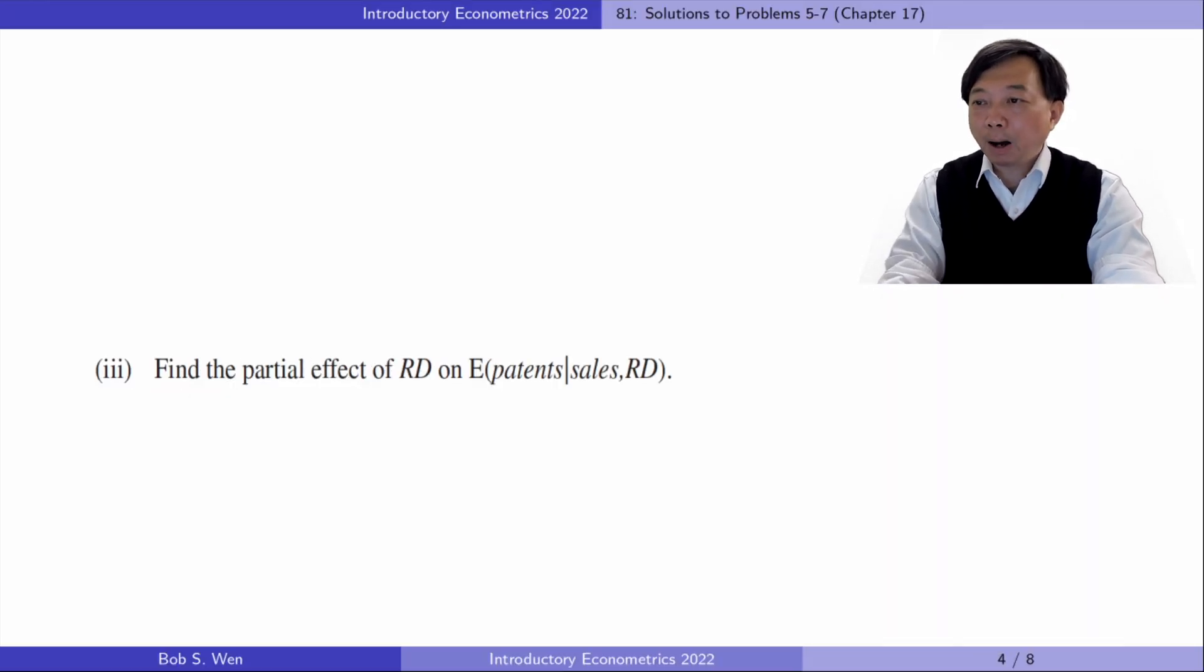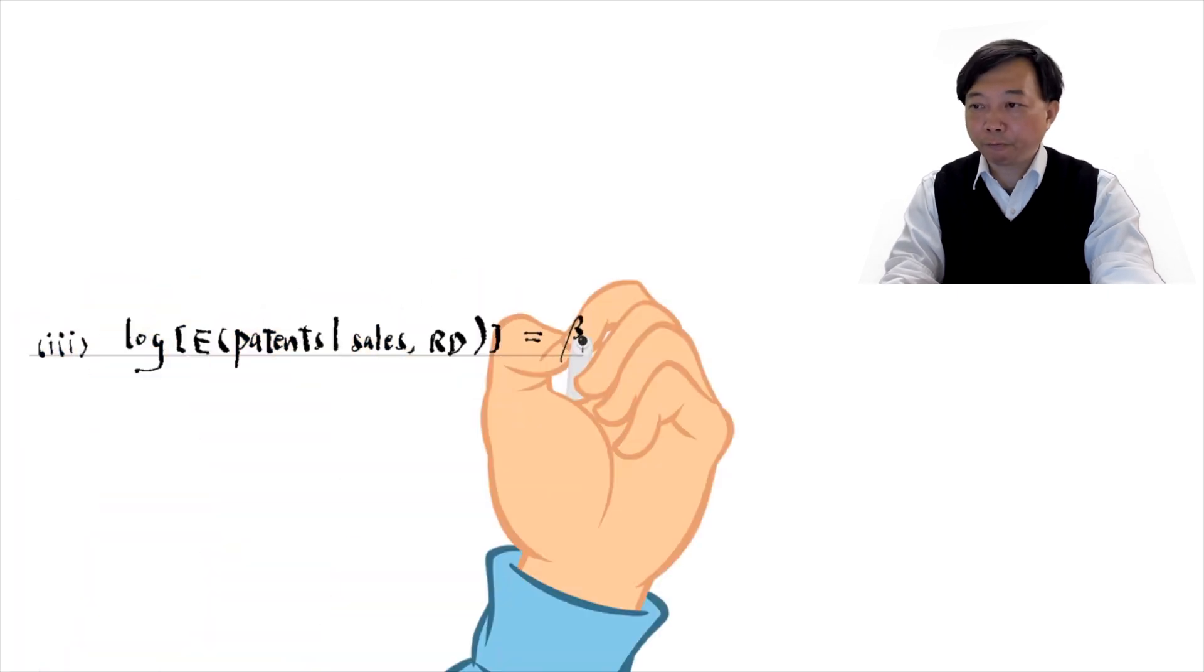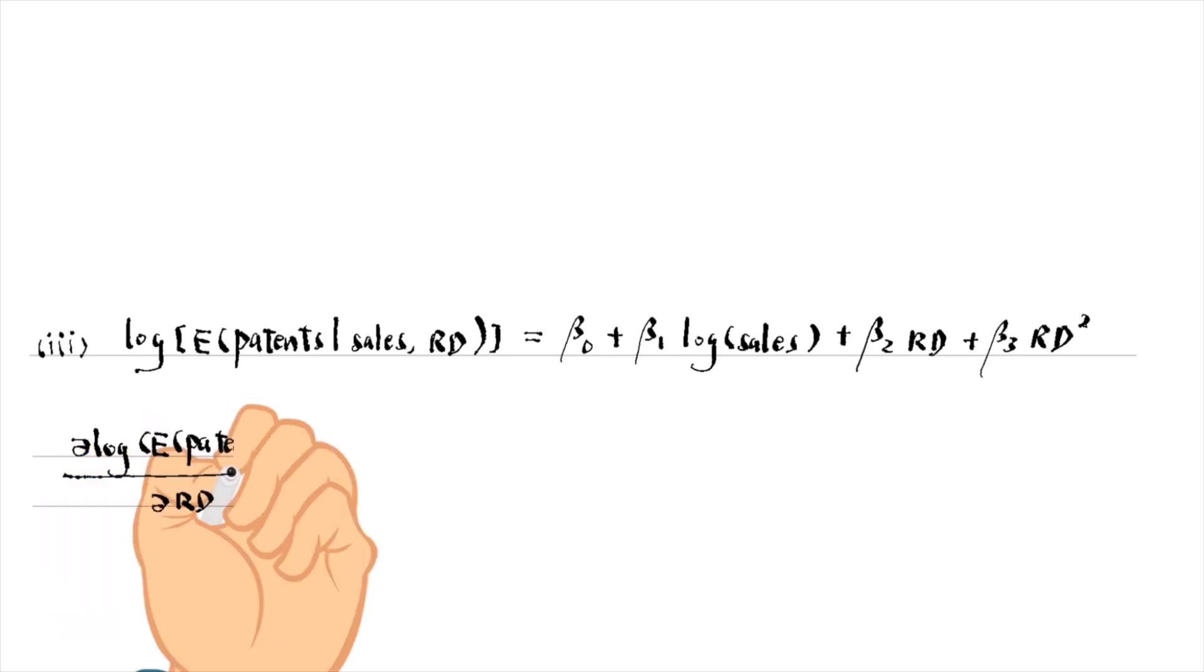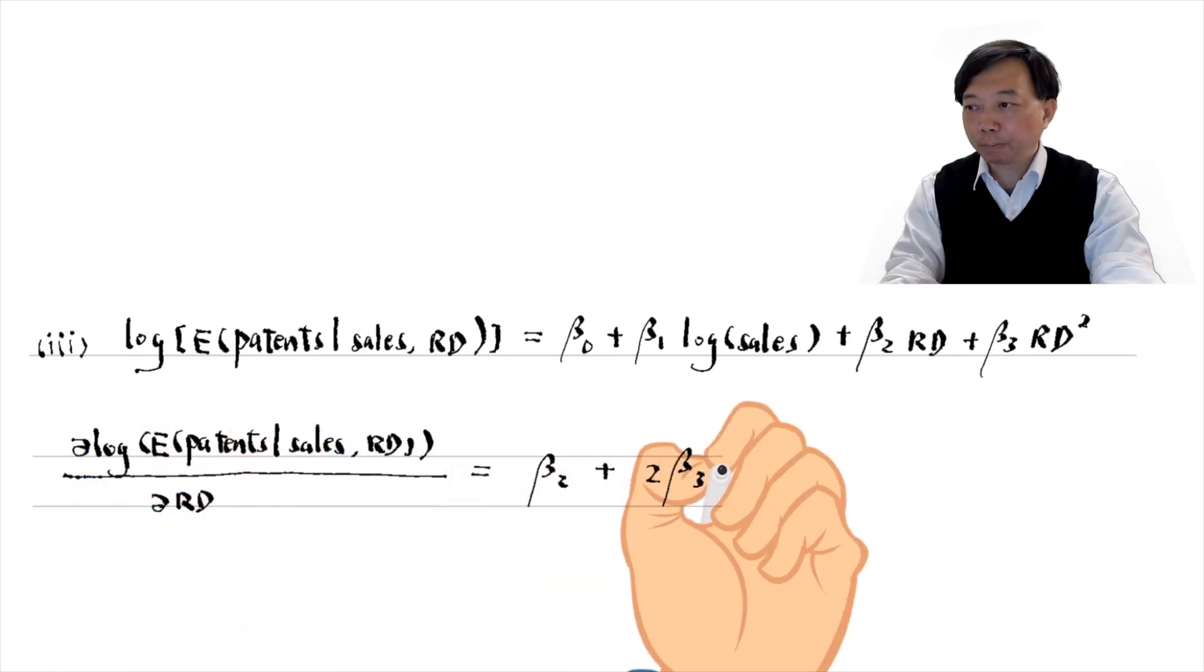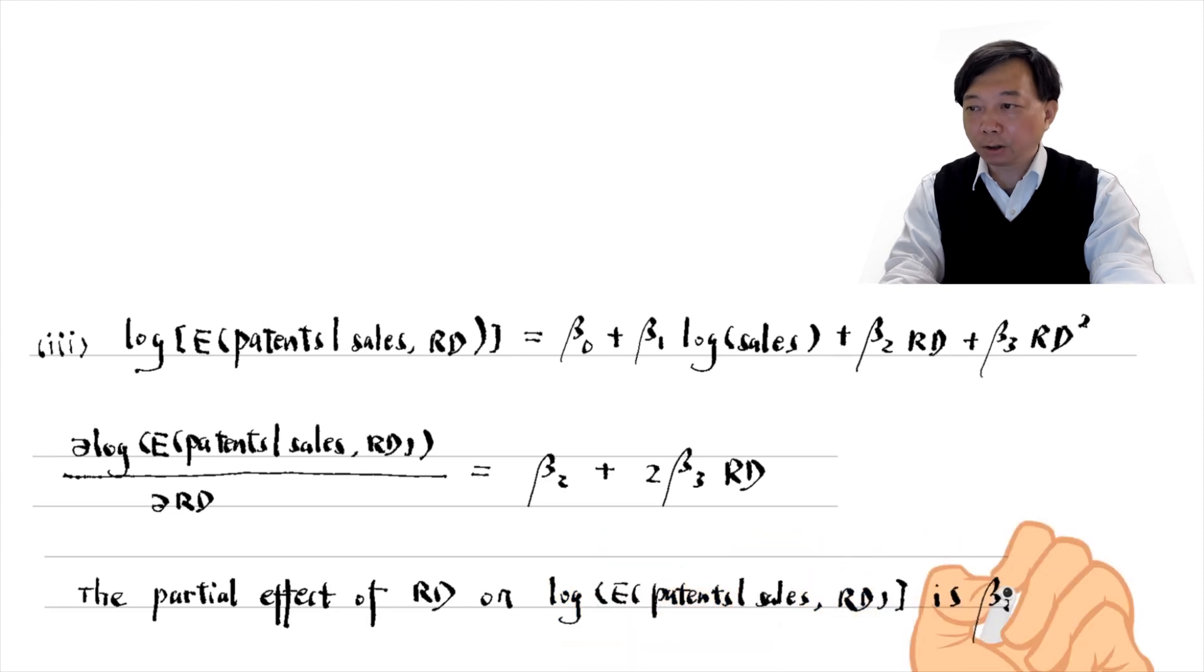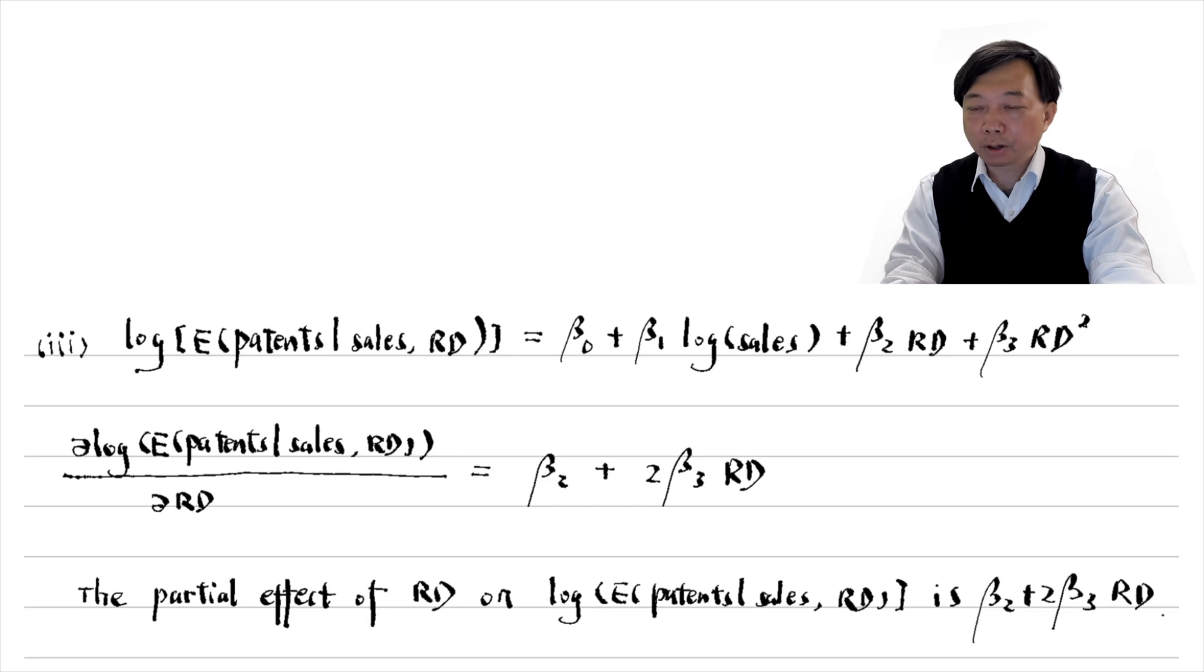In part 3, find the partial effect of R&D on the conditional expected value of patents. Taking the first derivative of log expected patents with respect to R&D, we have β₂ + 2β₃RD. That is the partial effect of R&D on the log expected patents. It is sometimes called semi-elasticity of the expected patents with respect to R&D. The percentage change in the expected value of patents given a 1 unit increase in R&D. It is a function of R&D, β₂ + 2β₃RD.